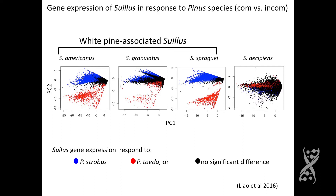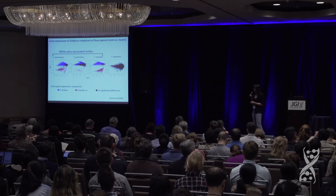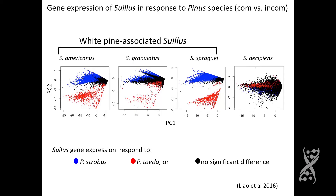This plot shows an example with four Suillus species across two Pinus hosts — the compatible host being P. strobus, and the incompatible host being P. taeda for the white pine-associated Suillus especially, while S. decipiens is more generalist so both hosts are compatible. The little dots are individual gene factors regulated in response to compatible host (blue) or incompatible host (red). Suillus talks very differently to its compatible host versus the incompatible host. Our previous study identified all those genes responding to compatibility, and I won't talk about that in detail here since the paper has been published.